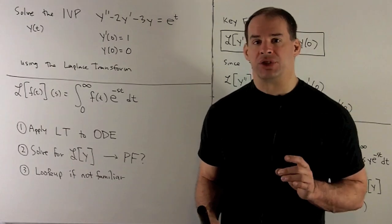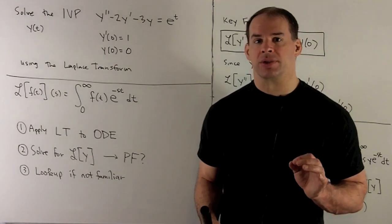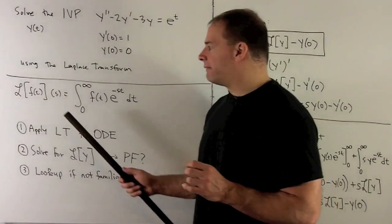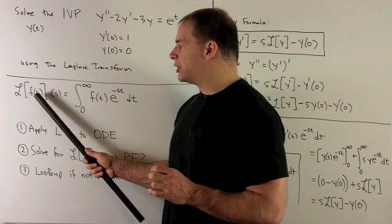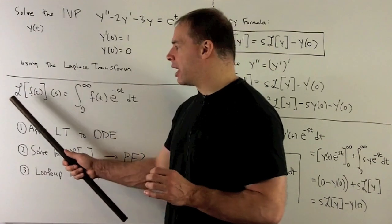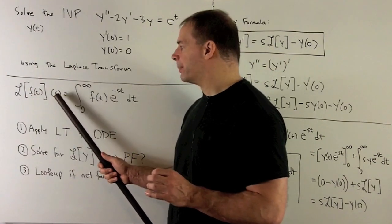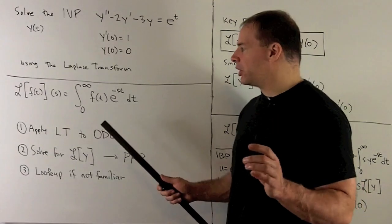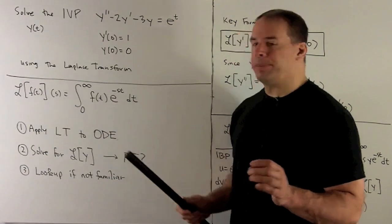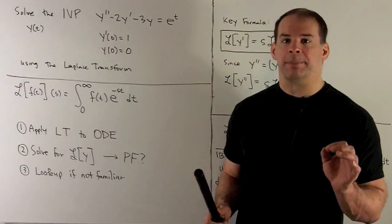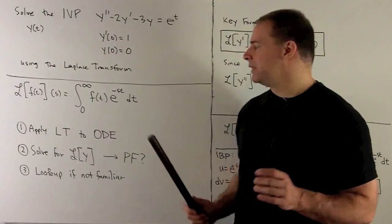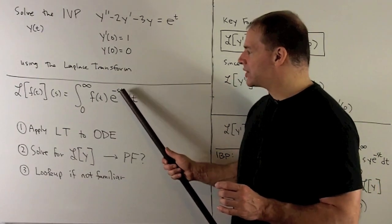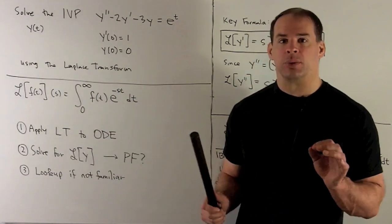First, let's recall the definition of the Laplace transform. It takes a function f of t and returns another function with variable s. We define it as the improper integral from 0 to infinity of f of t times e to the minus st dt, where we treat s as a constant when we integrate.